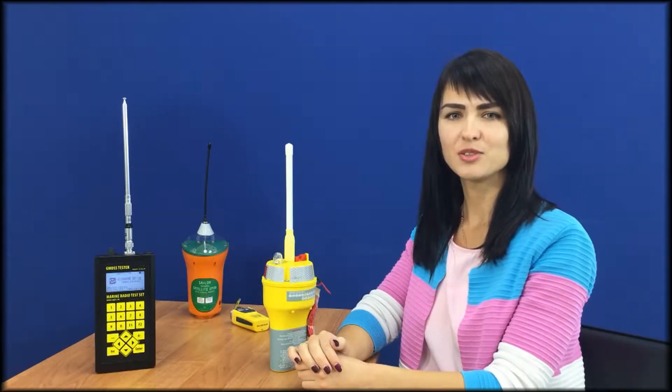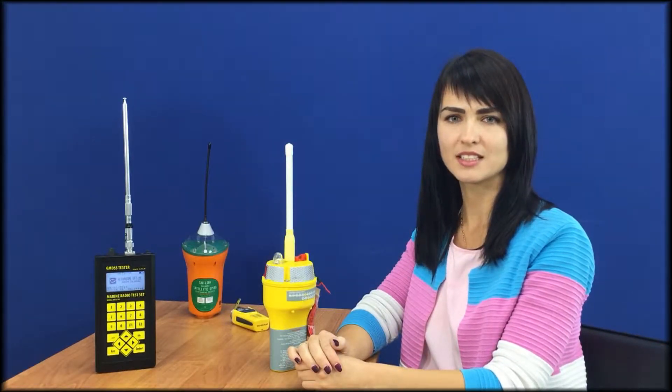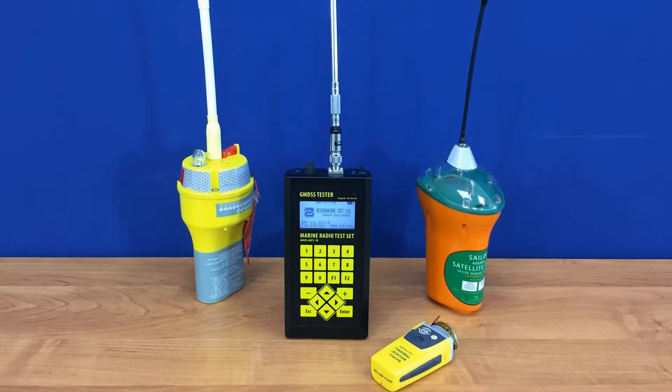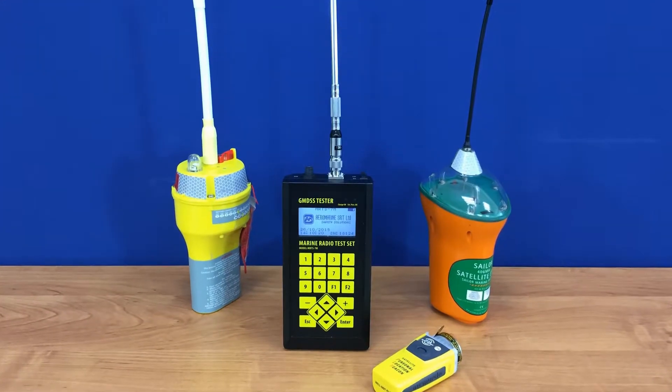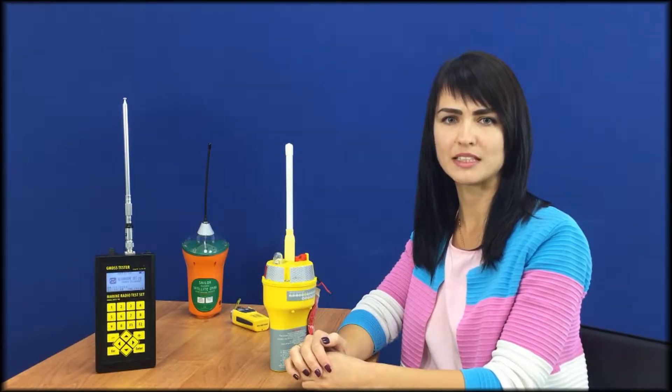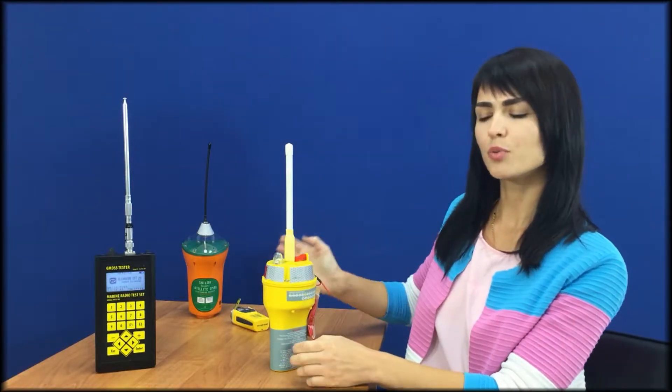In this video, I will show you how to perform the annual testing of COSPAS-SARSAT E-PIRB as required by SOLAS convention. The volume and order of the tests are described in IMO Circular 1040 and we will follow it.